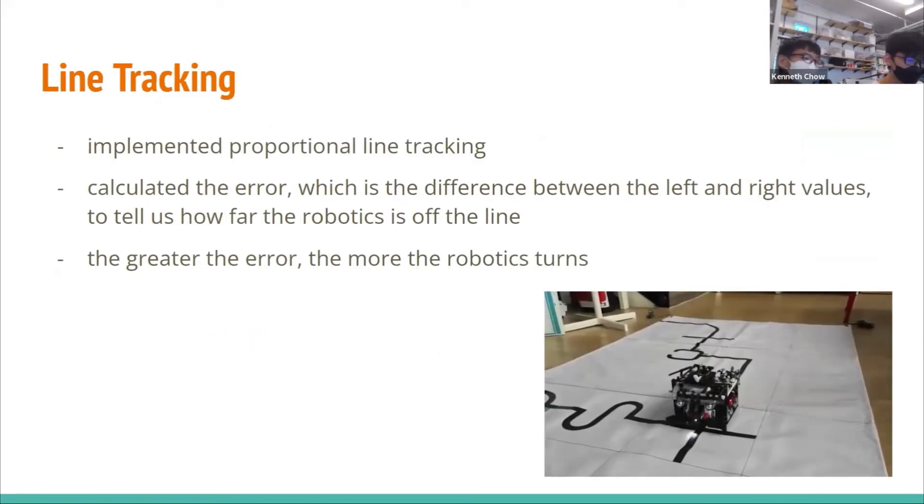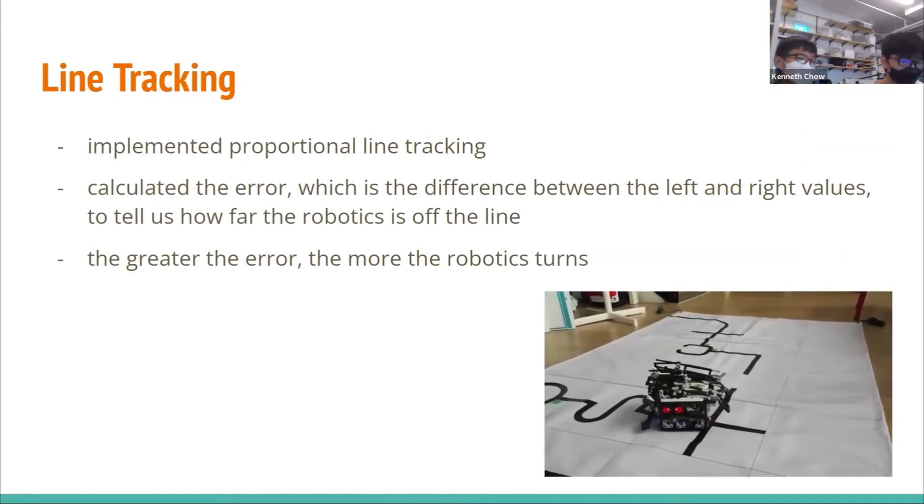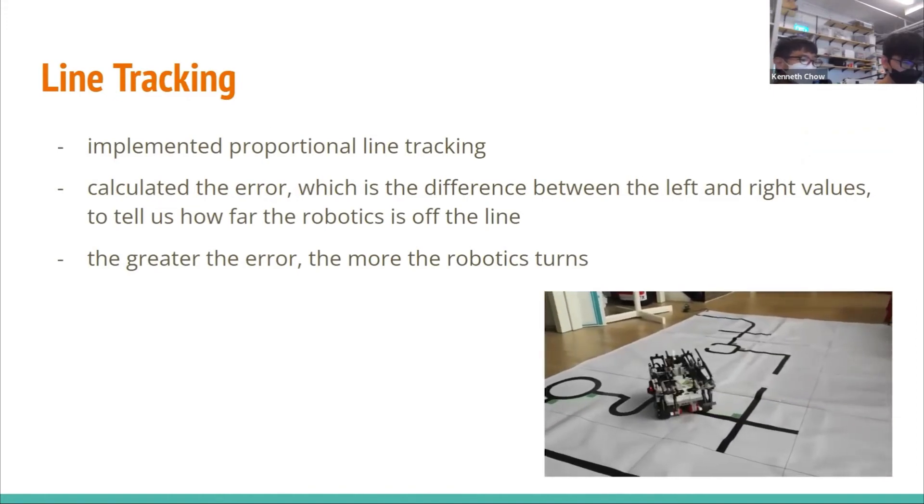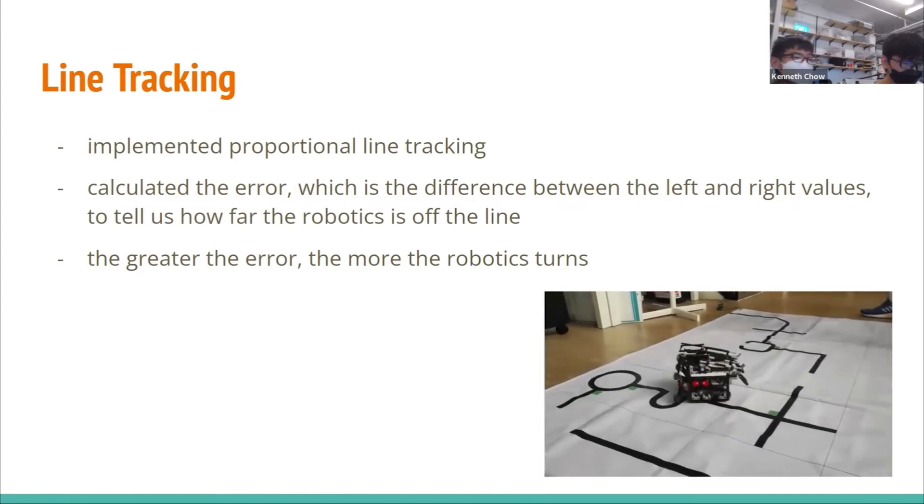For the line tracking, we implemented proportional line tracking. After calculating the error between the left and right downward-facing color sensors, the robot will turn the amount of error. So if there is more error, the robot turns more.